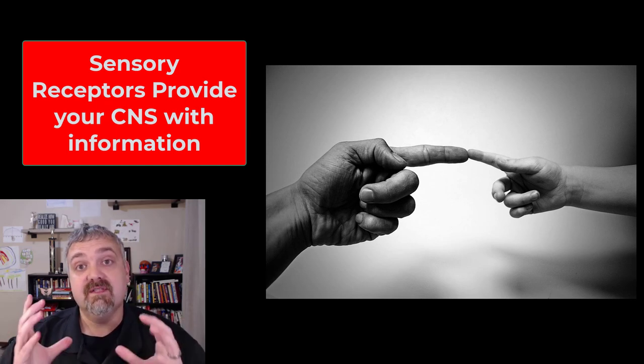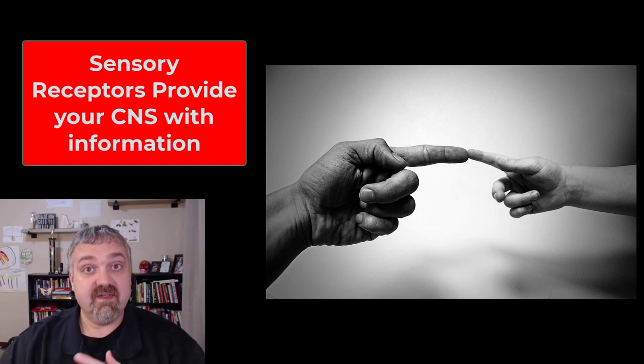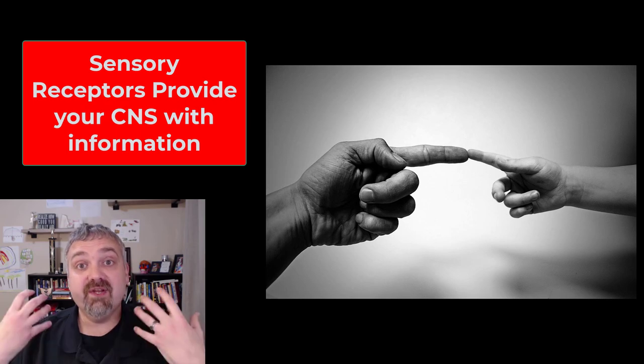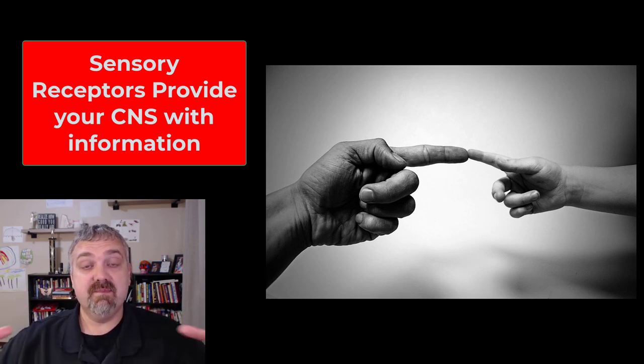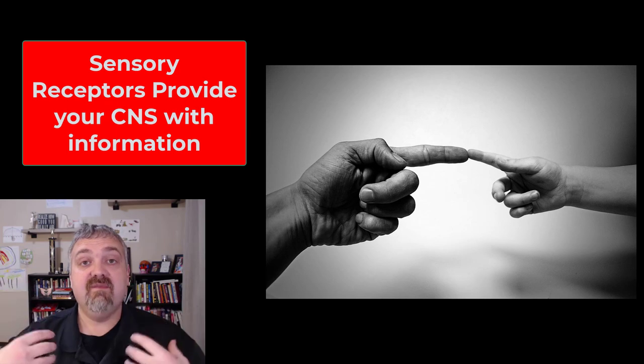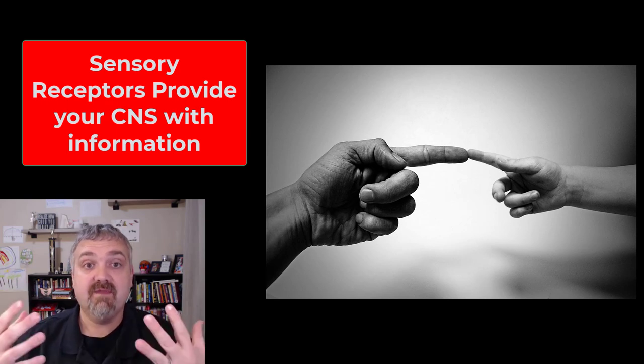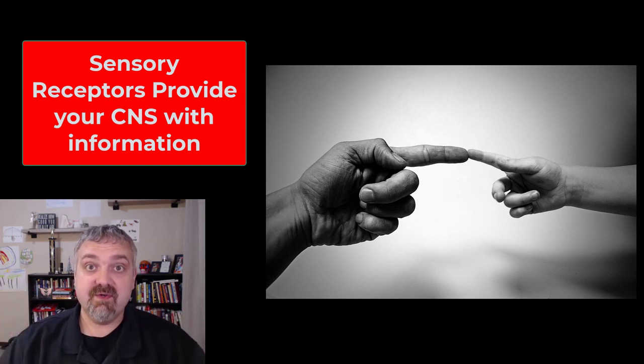Sensory receptors are either specialized cells or cell processes, parts of cells, that provide your central nervous system with information about the conditions both inside and outside the body. Your brain and spinal cord can't make decisions without the appropriate information. That's what your sensory receptors do.